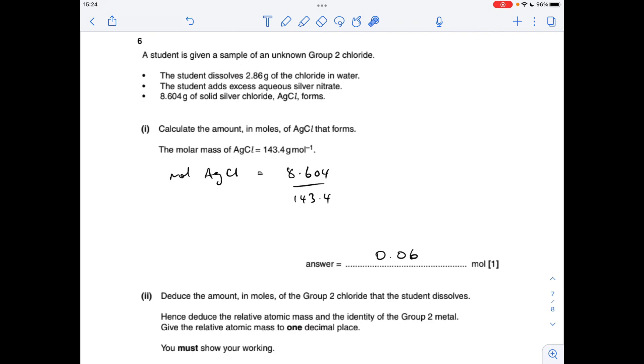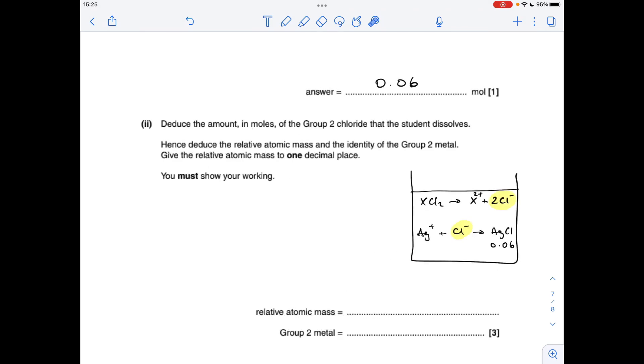Number six starts nice and easy. It's just moles of silver chloride is mass over MR: 0.06.